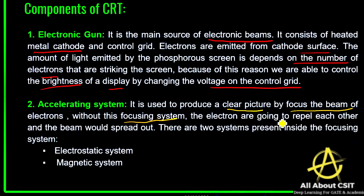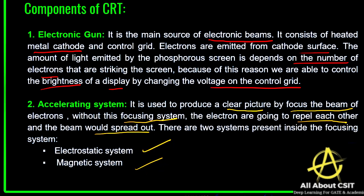Without the focusing system, the electrons would repel each other, come in a random fashion, and the beam would spread out completely. With the accelerating system, the beams flow in a particular direction and a clear picture appears on the phosphorus screen. There are two systems inside the focusing system: the electrostatic system and the magnetic system, which together produce a clear focused beam on the screen.